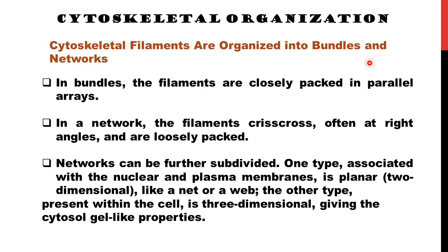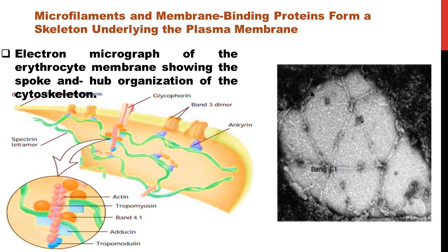Cytoskeleton filaments are organized into bundles and networks. Bundles are supposed to be parallel arrays where filaments crisscross and web-like structures form. Here you will see a spoke-and-hub structure in the cellular cytoskeleton of a eukaryotic cell — a particular example of an erythrocyte cell. Erythrocyte cells have to travel and squeeze through adjacent layers of tissues to move from one place to another, so they must be flexible enough to maintain their structure.